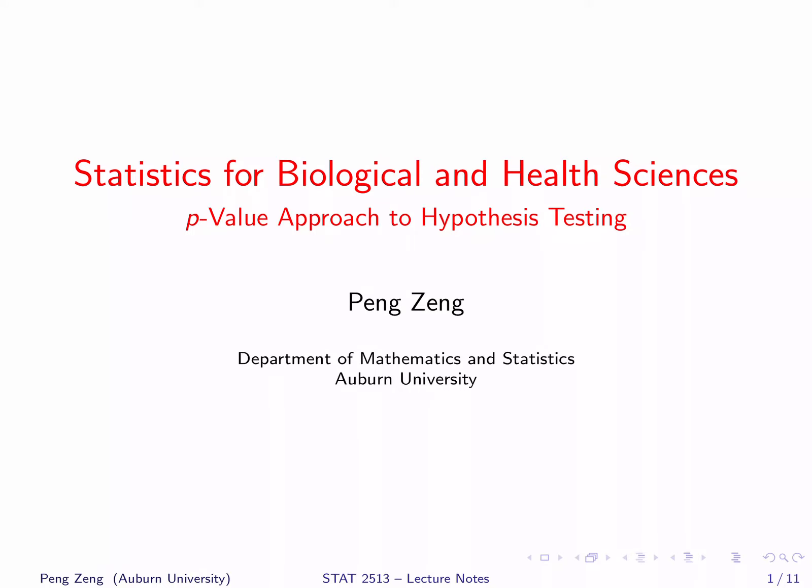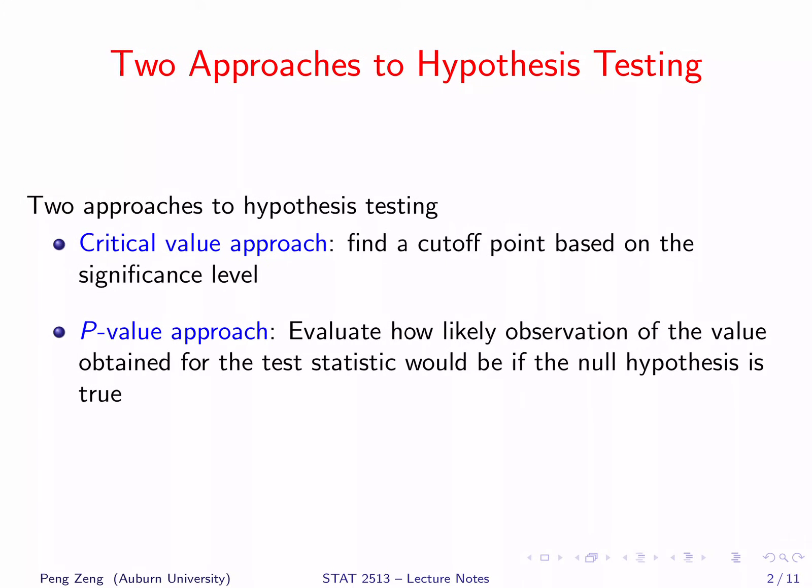This lecture discusses the p-value approach to hypothesis testing. There are two different approaches to hypothesis testing. The first one is called the critical value approach. In order to draw a conclusion about a hypothesis testing problem, we find a cutoff point based on the significance level. Whether rejecting the null hypothesis or not depends on whether your test statistic is larger than or smaller than this cutoff point.